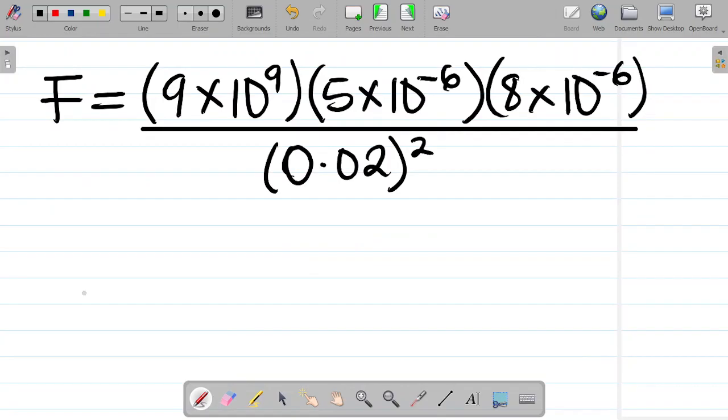Let's solve this question. From here, we have F is equal to... Let's look at numerators. So I have 9 times 10 to the power 9, multiplying 5 times 10 to the power minus 6, multiplying 8 times 10 to the power minus 6. My value there would be 0.36. So I have this as equal to 0.36.